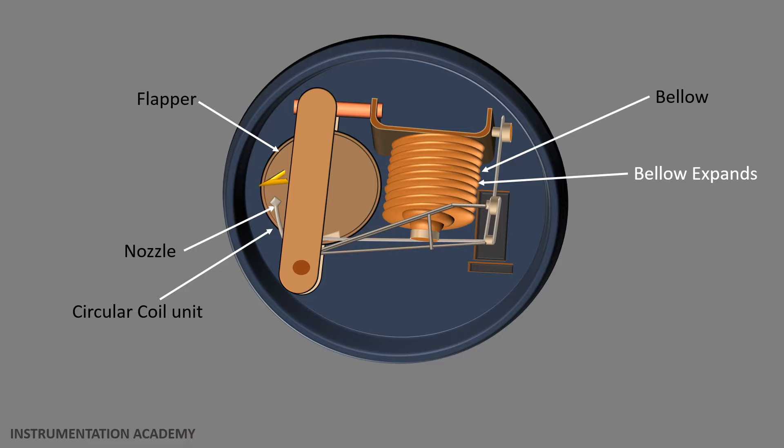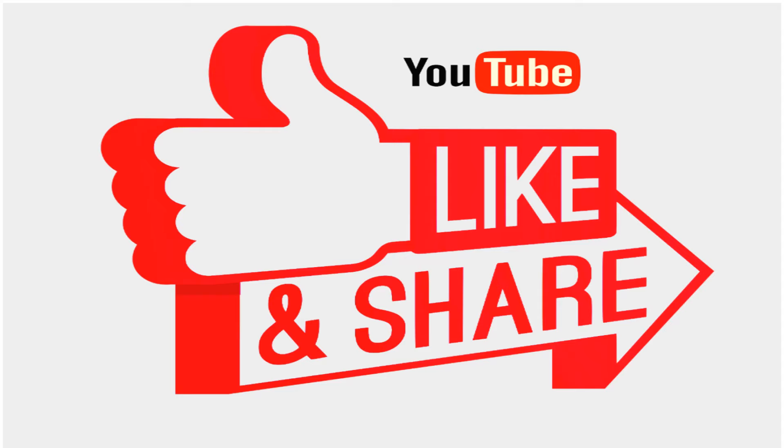As the bellows expands, it draws the nozzle away from the advancing flapper, achieving balance by matching the motion of the flapper with the nozzle's motion. In other words, the nozzle backs away as the flapper advances towards the nozzle. The motion of one is matched by the motion of the other, making this a motion balance instrument.